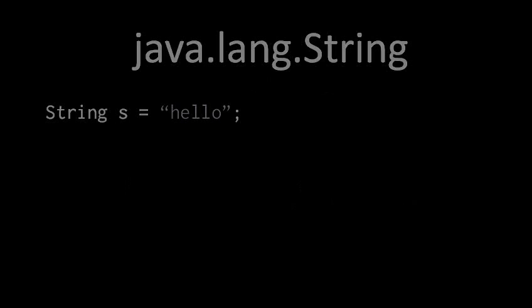Another important class in java.lang is the String class. Every string in Java is an instance of this class. For example, if we have a string literal such as the string reading "hello" and we wish to assign it to a variable, we have to assign it to a String reference. The String class includes several dozen methods, including one called length, which returns the number of characters in the string as an int value. So when we invoke length on the string, it'll return 5, because that's the number of characters.